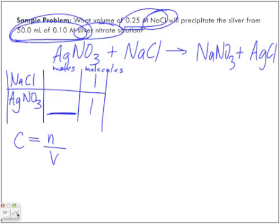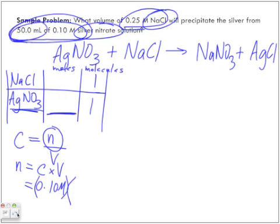If I want to find out the number of moles of silver nitrate, I want to isolate my n. So n equals my concentration times my volume. My concentration is 0.10 moles per liter times 50.0 milliliters converted to liters, which is 0.05 liters. When we multiply the two together, we get 0.005 moles of silver nitrate.